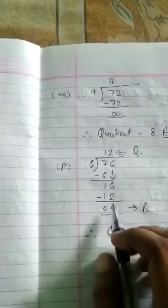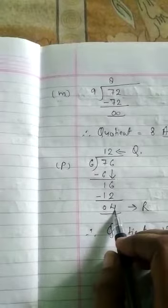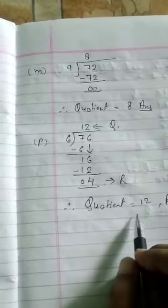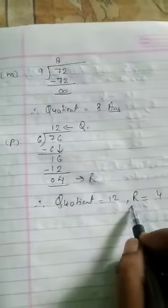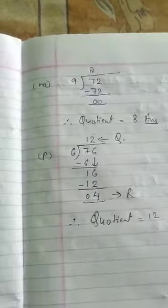And 4 is smaller than 6. That's why it will not cancel out now. And it is your remainder. This is your quotient. Quotient is equal to 12. This is your answer.